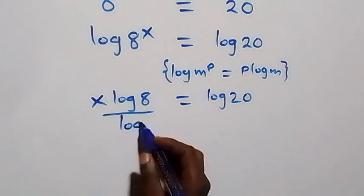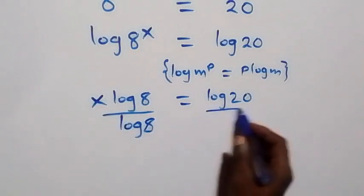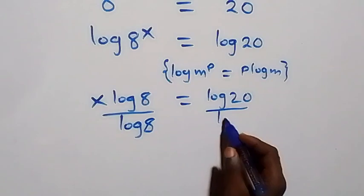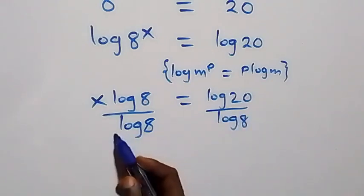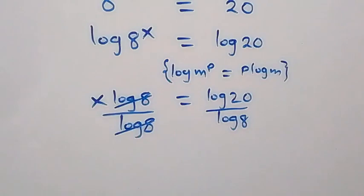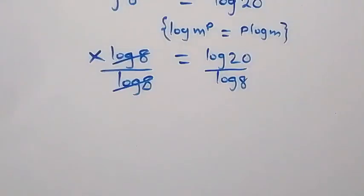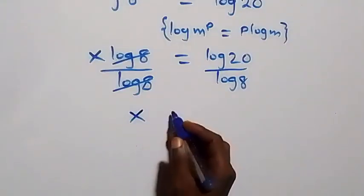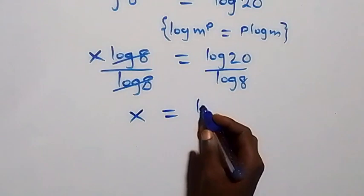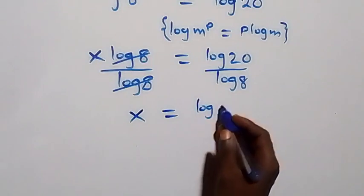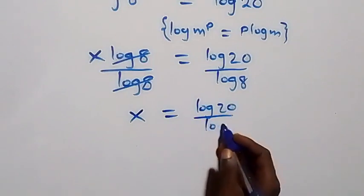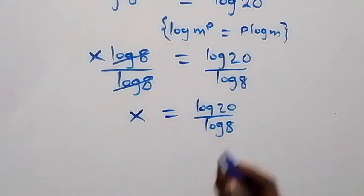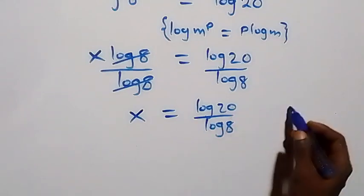We divide this side by log 8 and also divide this side by log 8. Here log 8 cancels each other, and we have x equals to log 20 over log 8.